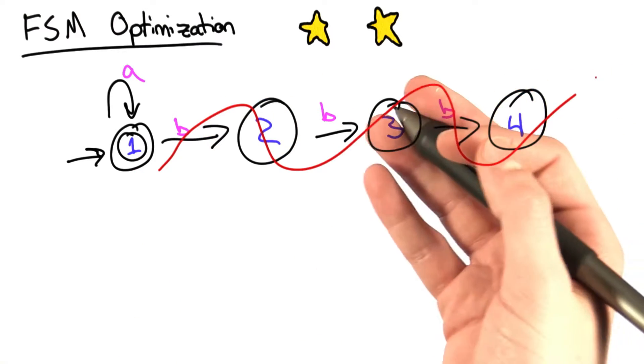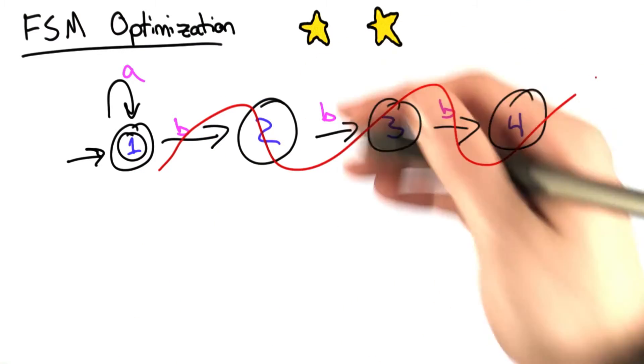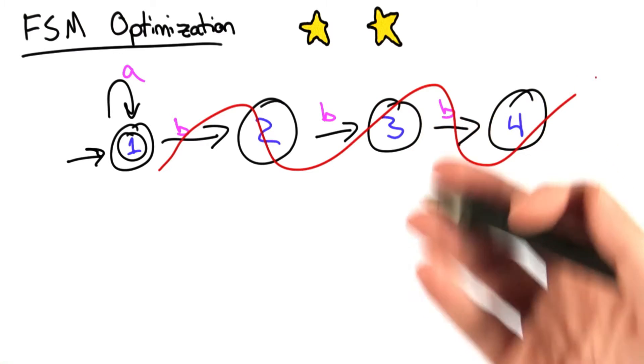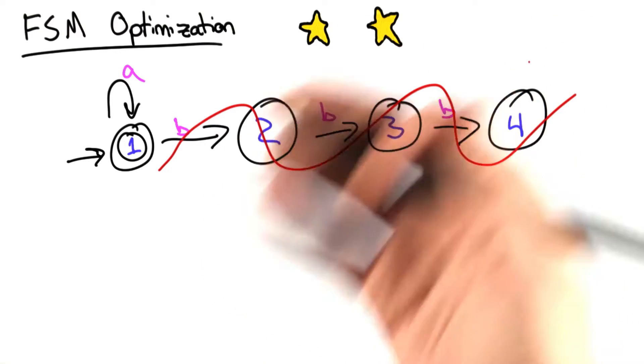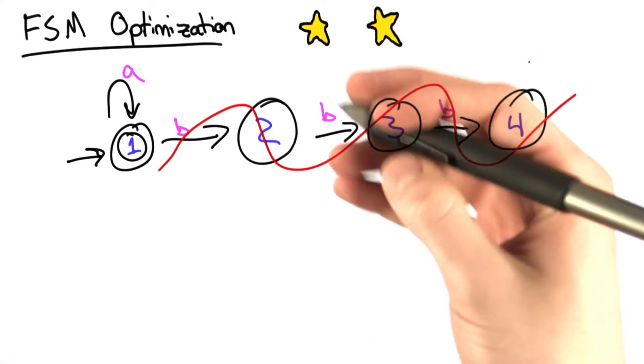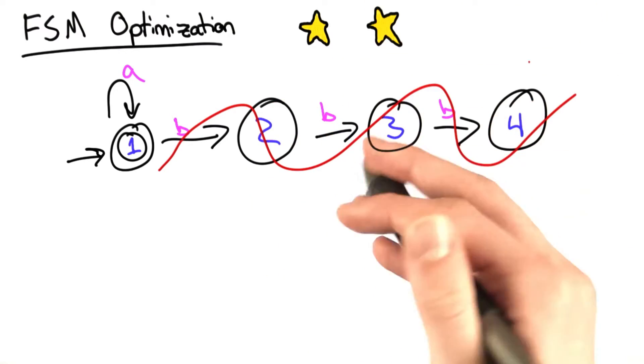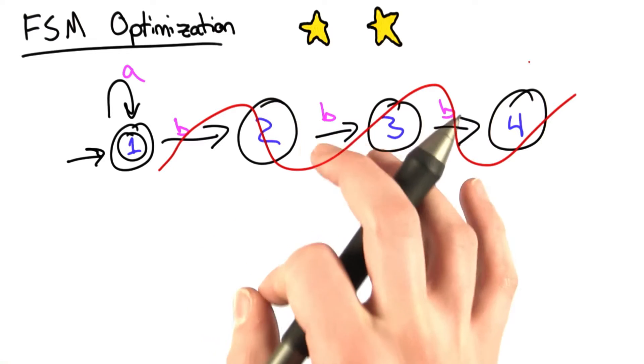So why would we want to do this? Well, if you haven't noticed, we've been using a lot of regular expressions in building our web browser. Those regular expressions are represented as finite state machines, and that's how they're processed. In order to make our web browser faster, it turns out we want as small finite state machines as possible.